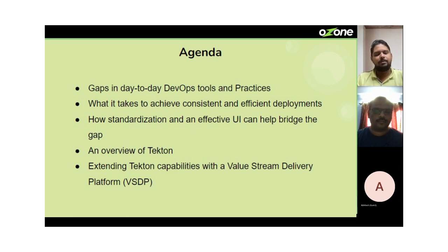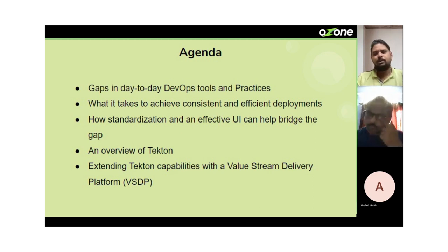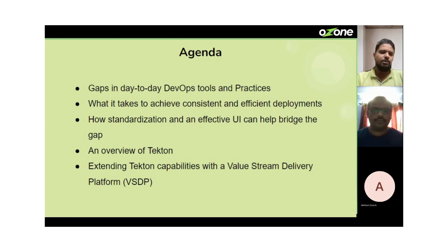What typically happens in such organizations is that there are multiple sources from where they source their applications. Some of it might be developed internally, some might be COTS applications supplied by external vendors. For example, take Finacle, which is developed by a company called Infosys and is part of the core banking systems of many financial institutions.